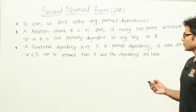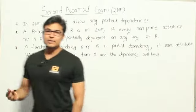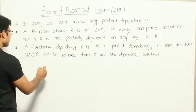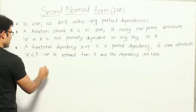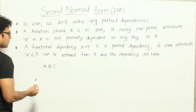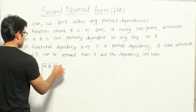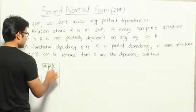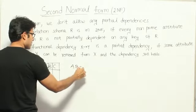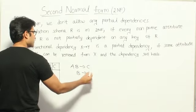Now let's see the second normal form. Using the second normal form, we can eliminate some redundancies. I will take an example and explain before going with the definition. Let us say we have a table ABC and the functional dependencies given on this table are: AB determines C, and B determines C.